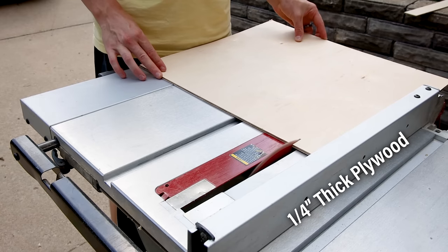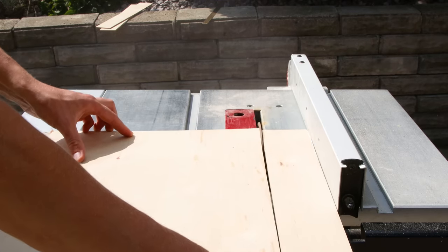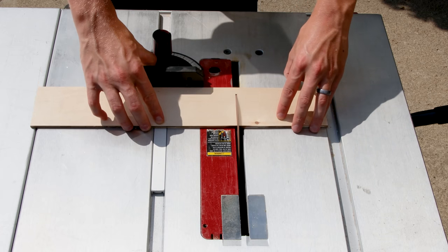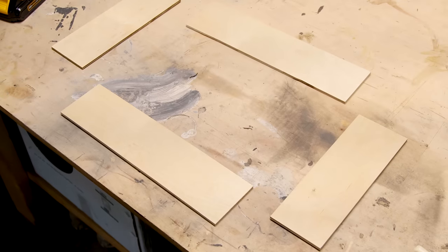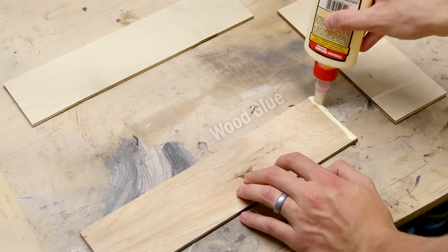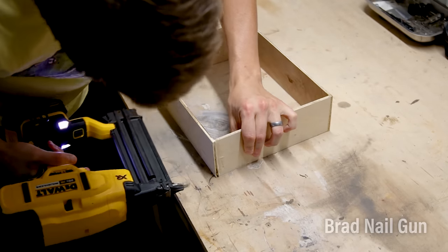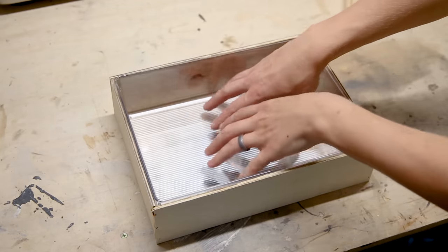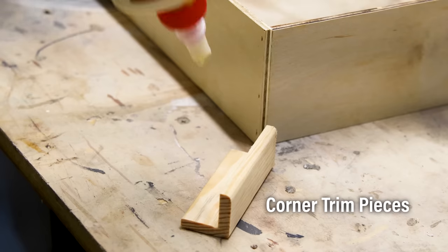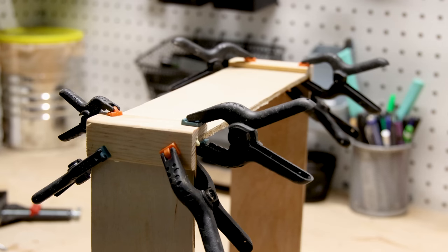I got some plywood and ripped it down on the table saw to the appropriate height. I measured for the width and repeated the process. I'll use wood glue to combine the pieces together. I applied it to the edges, then I lined up the corners and locked them together with a nail gun. I checked to ensure it fit over the tray before continuing.